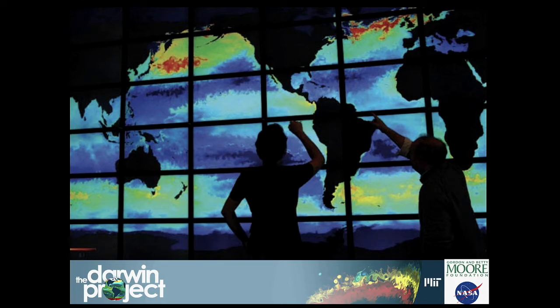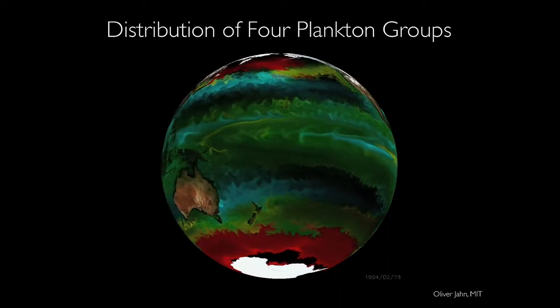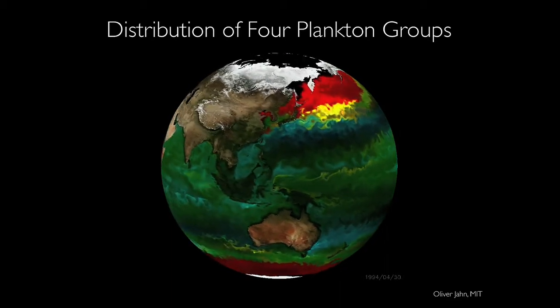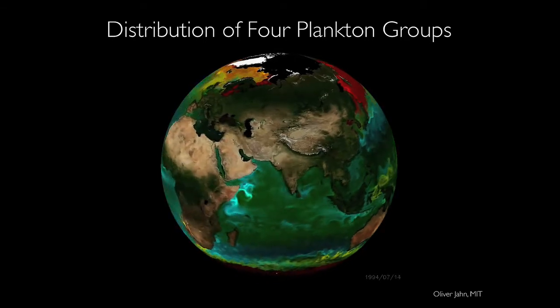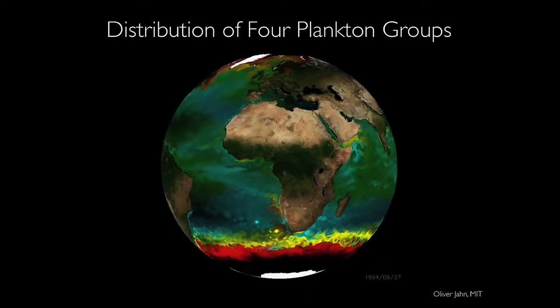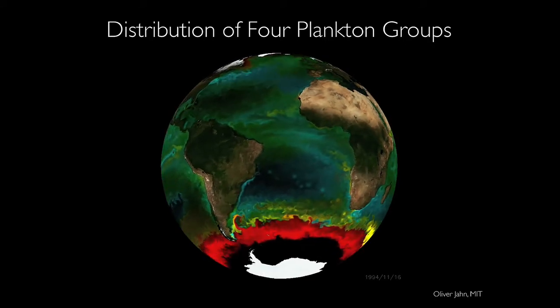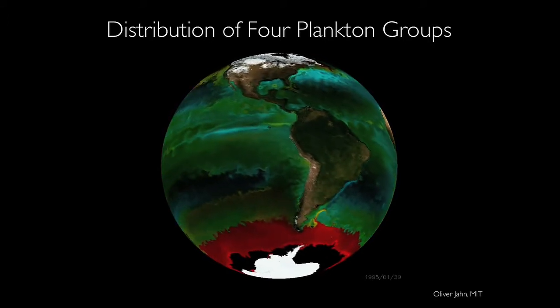One of the leading models for studying plankton dynamics is the Darwin Project at MIT. It's a supercomputer-based simulation that takes all sorts of data to model things about plankton: how many are there, where do different types live, how do they change in response to the environment. It's a model used by dozens of researchers to address fundamental questions about these microscopic creatures. Here is one output from that model, produced by the Darwin Project. It shows the distribution of four major plankton groups represented by red, yellow, turquoise, and green.